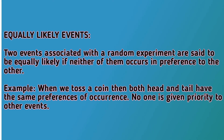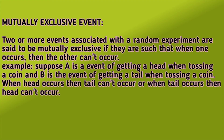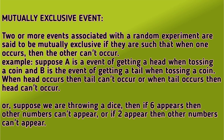Next one is mutually exclusive events. Two or more events associated with a random experiment are said to be mutually exclusive if when one occurs, the other cannot occur. For example, if you are tossing a coin and head occurs, tail cannot occur at the same time. Or if you are throwing a dice and the number one appears, the other numbers cannot appear at the same time.